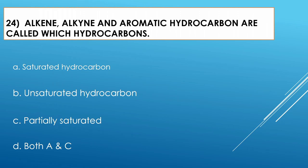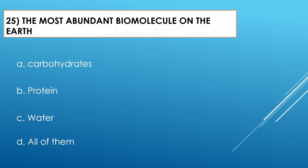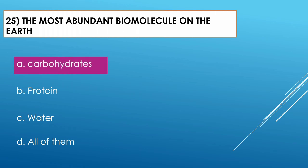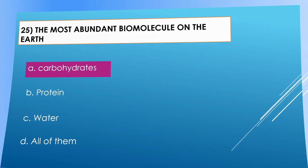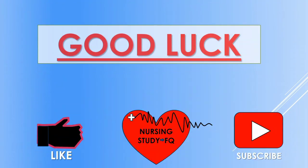Question number twenty-four: Alkyne and aromatic hydrocarbons are called which hydrocarbons? Option A: saturated hydrocarbon. Option B: unsaturated hydrocarbon. The correct option is unsaturated hydrocarbon. The most abundant biomolecule on the earth is carbohydrate.